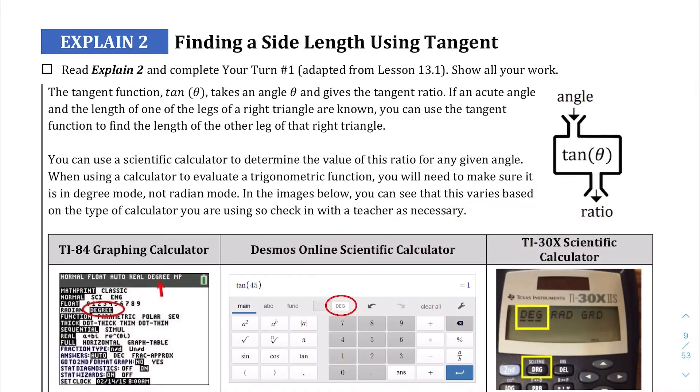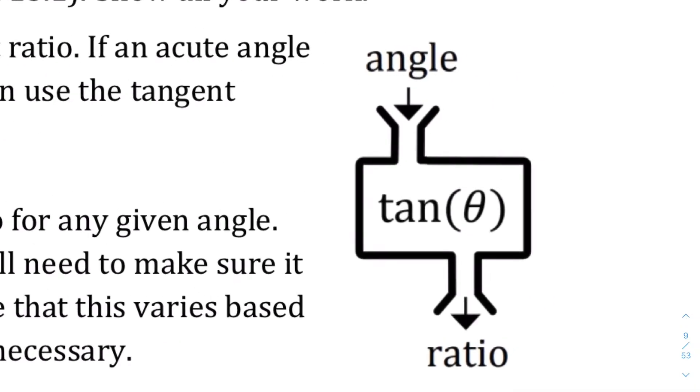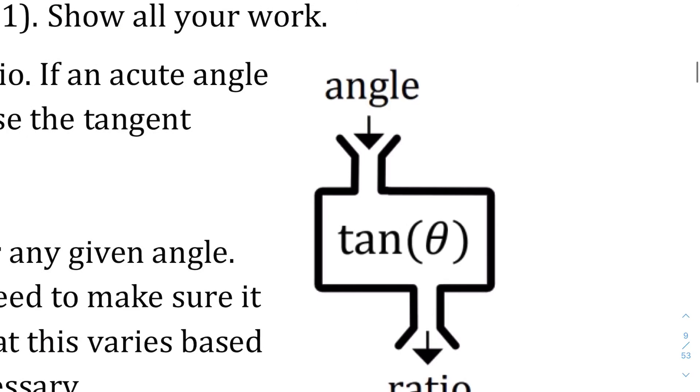Okay, here we are on Explain 2 for Lesson 13.1. We're going to use the tangent ratio to find a side length, and then we're also going to later use the tangent ratio to find the missing angle. Using these trigonometric ratios, we can pretty much use them to find missing pieces for any right triangle in the case of the problems that we're dealing with.